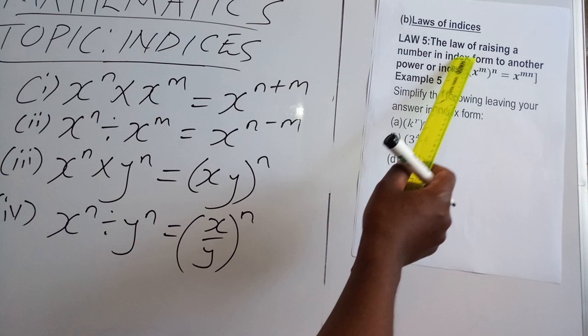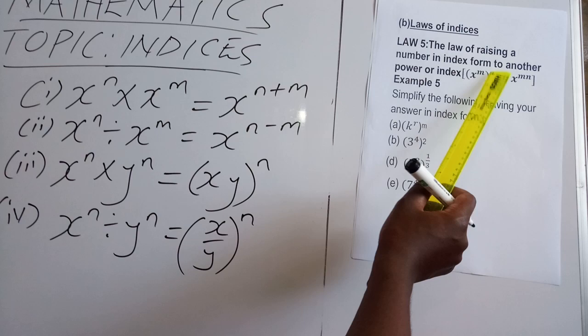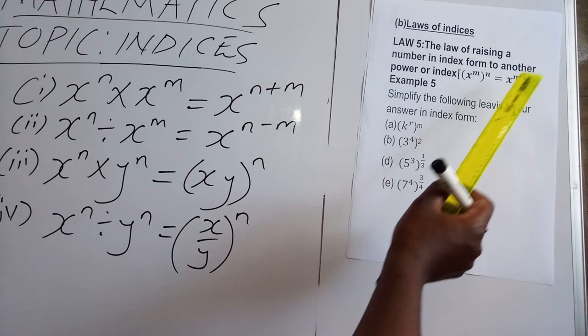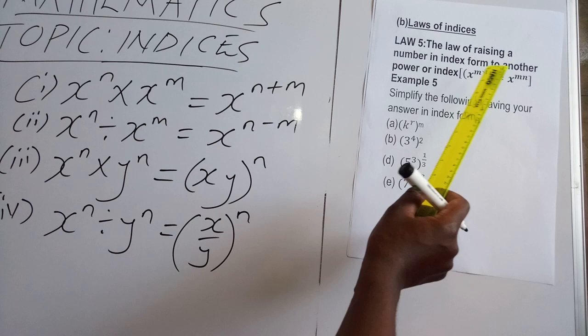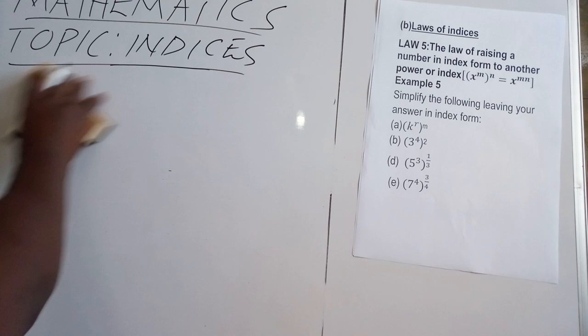Now, which law is this? It is the law of raising a number in index form to another power or index. This is how the law is stated: X power M raised to power N — where both M and N are powers. X power M raised to power N gives you X raised to power MN. How do you get MN? Simply by multiplying M and N, which are the powers.